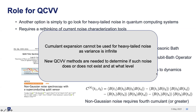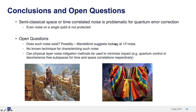Conclusions from the first portion: semi-classical space- or time-correlated noise is problematic for quantum error correction. Even noise on a single qubit is not protected if it has certain distribution type and time correlation structure. Open questions: does heavy-tailed correlated noise exist in real systems? Mitigation approaches may include encoding in decoherence-free subspaces for perfectly space-correlated noise, or quantum control sequences for perfectly time-correlated noise.